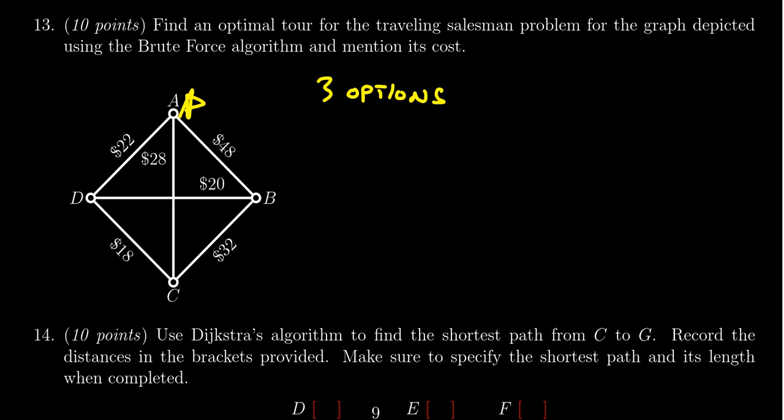One option is to go around the whole thing: A-B-C-D-A. If you reverse that process, going counterclockwise instead of clockwise, that's a second option I'm not going to list separately. This costs 48 plus 32 plus 18 plus 22, which equals 120 dollars. That's the number to beat right now.